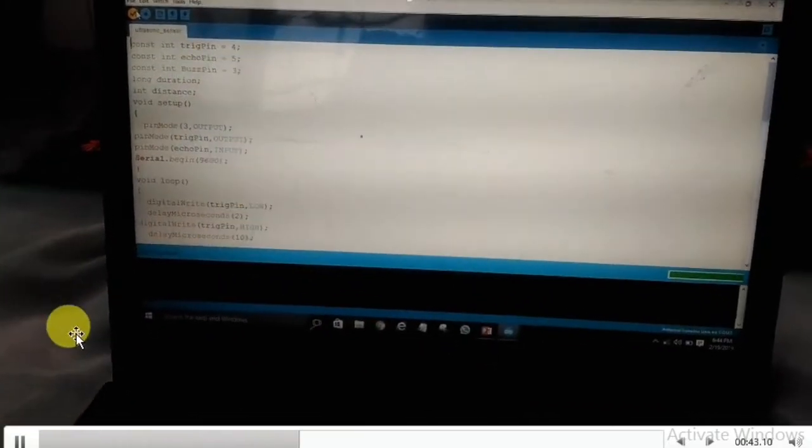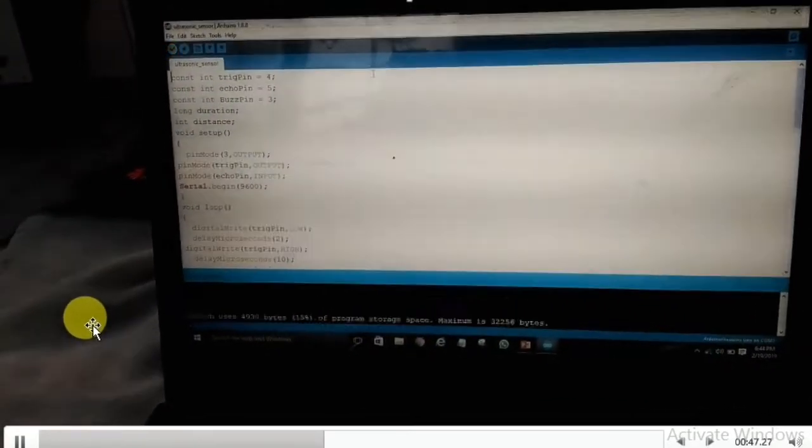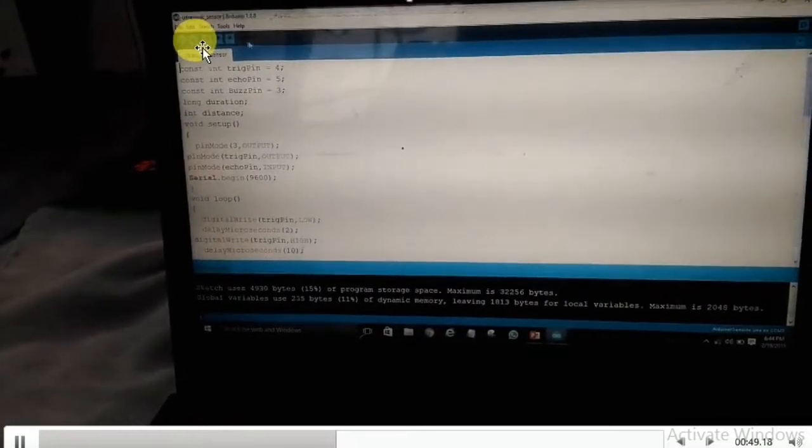Here you can see a check mark - this is for the compilation of the program. The program has been successfully compiled, and the very next symbol to it is for uploading the program. The program is also being successfully uploaded.